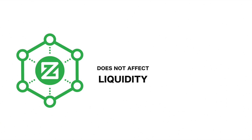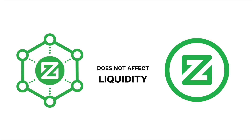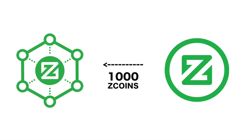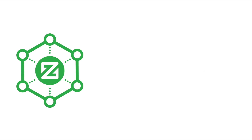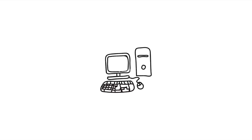Because the use of zero knowledge proof means there's no mixing to be seen. The nodes are verifying mathematical proof to show that a person doing a zero coin spend transaction has done a valid zero coin mint transaction without revealing which mint it is. Znodes also do not affect the liquidity of Zcoin. Even though you need a thousand Zcoins to be a Znode, if you really need to withdraw some of those coins, you can do so at any given time, you will just go from a Znode back into a regular node.